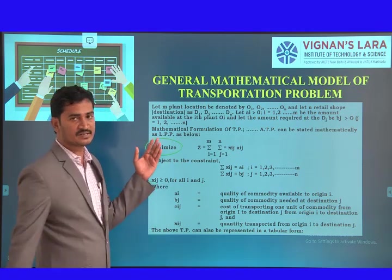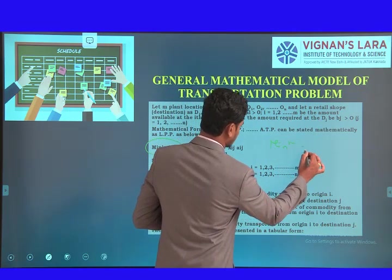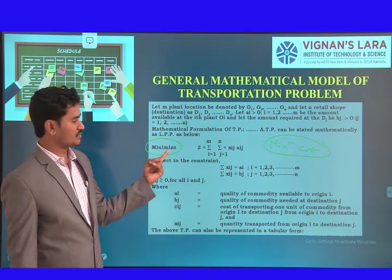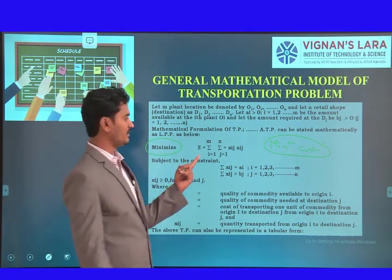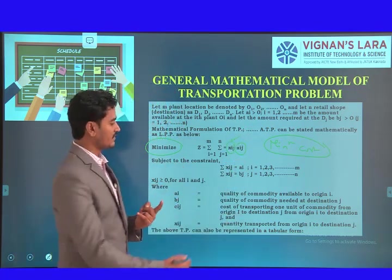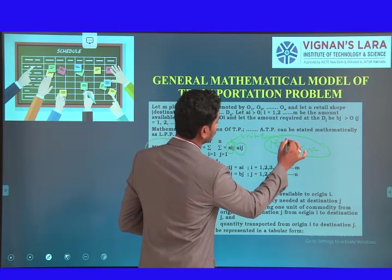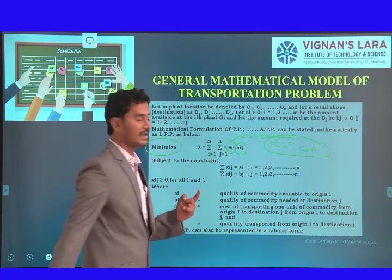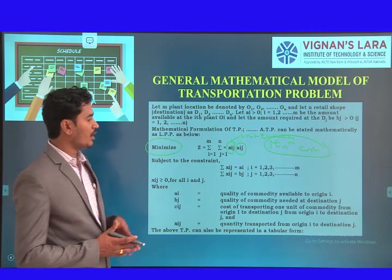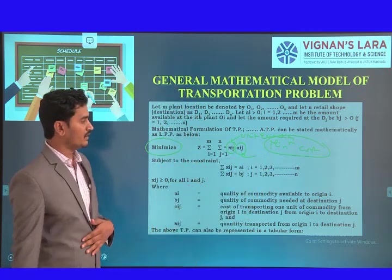The objective function is 'Minimize' — because we are minimizing transportation cost. We choose the objective function as minimization. The decision variable Xij is the number of units transported (the quantity). Cij is the unit transportation cost. Aij refers to the availability of the commodity — how many units are available at the origin. So the objective is to minimize the total transportation cost: minimize the sum of Cij times Xij.